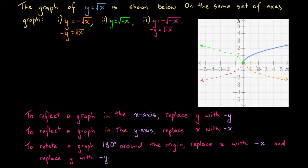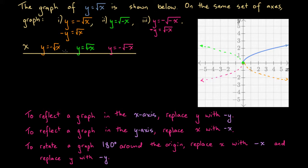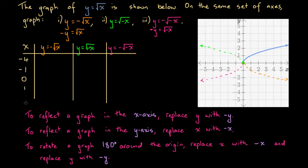Let's confirm these three graphs by constructing a table of values. We'll consider x values of minus 4, minus 1, 0, 1, and 4, and calculate y values for the orange function y equals minus square root of x, the green function y equals square root of minus x, and the pink function y equals negative square root of minus x.